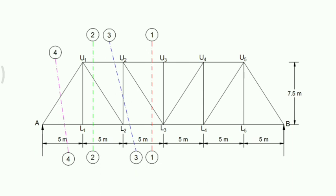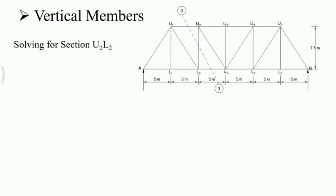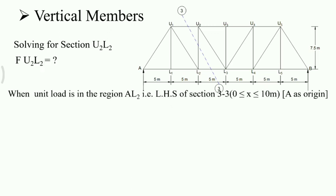In the previous members, the forces we obtained were in the top chord members, bottom chord members, and diagonal members. The remaining members are the vertical member and the end post. We will start with the vertical member U2L2. Here, we will keep the unit load on the left-hand side of section 3-3.